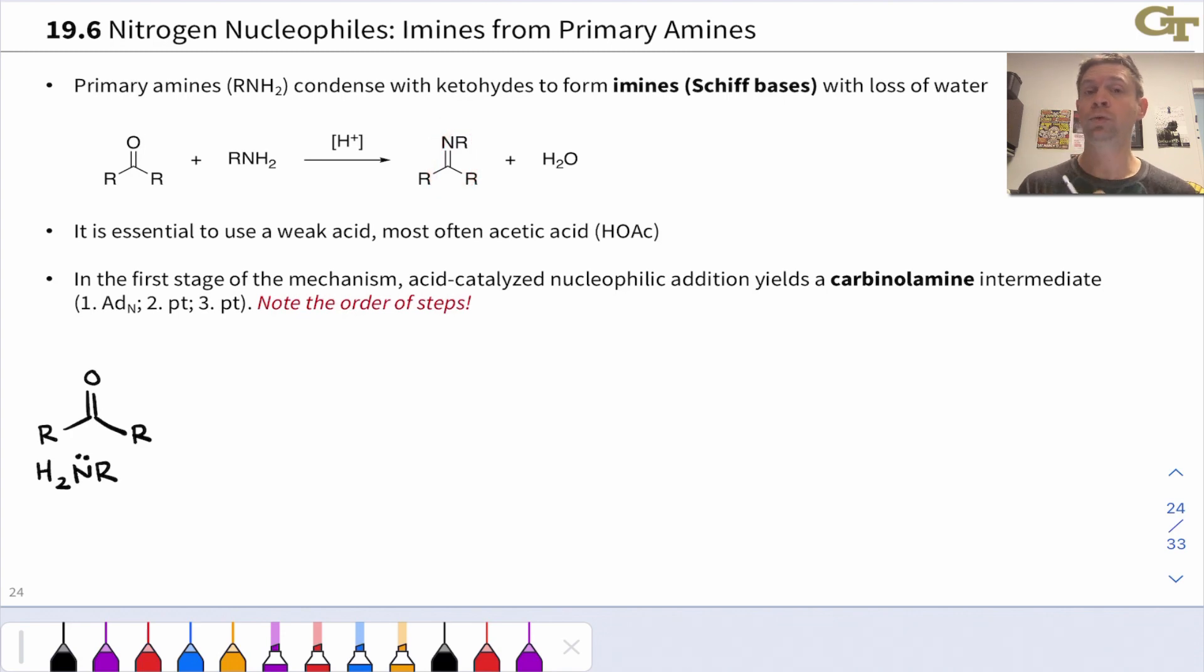So two new carbon-nitrogen bonds, but now it's a double bond rather than two single bonds, and a molecule of water is given off. This is commonly referred to as imine condensation since a small molecule is given off. This is an example of a condensation reaction.